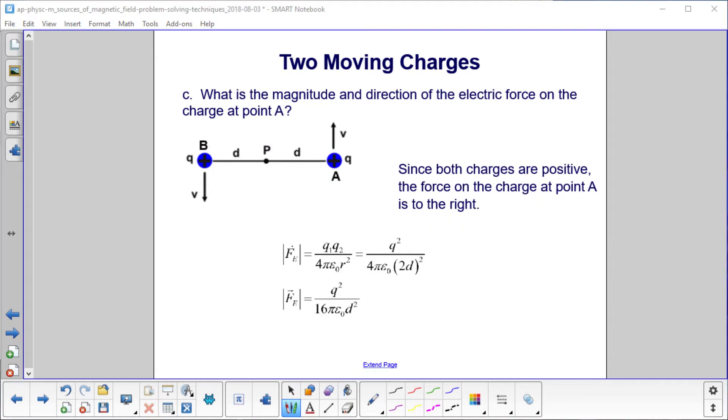What is the magnitude and direction of the electric force on the charge at point A? We go back to Coulomb's law, so you always have to remember stuff you learned earlier, which is just the two charges divided by four pi epsilon zero...